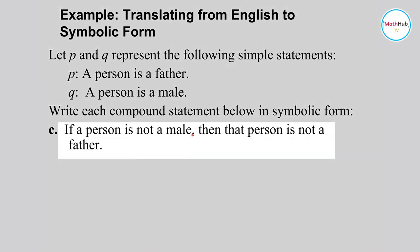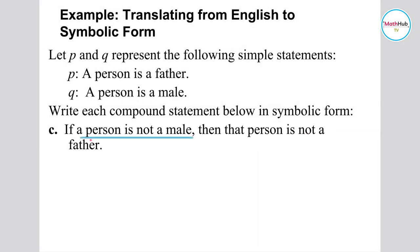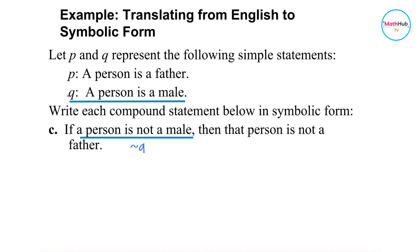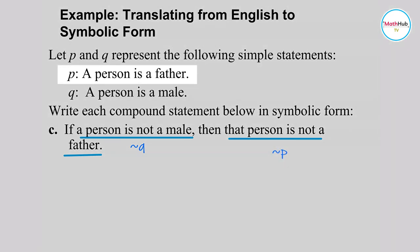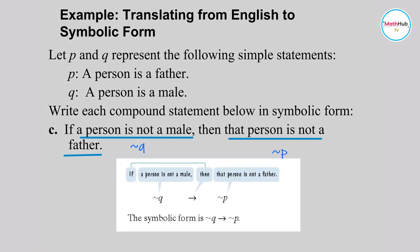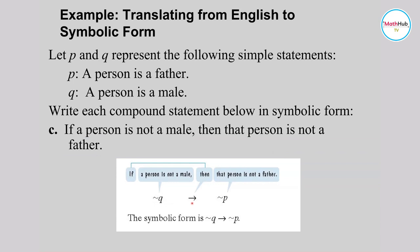Next, consider the statement 'if a person is not a male then that person is not a father.' 'A person is not a male' is the negation of q, so this is ¬q. After the word 'then,' 'that person is not a father' is the negation of p, so this is ¬p. Therefore, since this is an if-then statement, it is written symbolically as ¬q → ¬p.